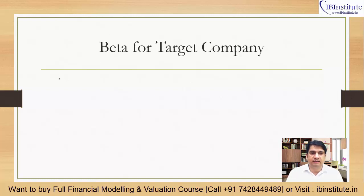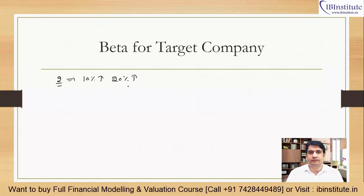So if beta is, let's suppose, 2 — what does it display? It shows that if the overall market goes up by 10%, then the individual security whose beta is 2 will go up by 20%. Similarly, if the overall market is 10% lower, then your individual stock will go down by 20%.